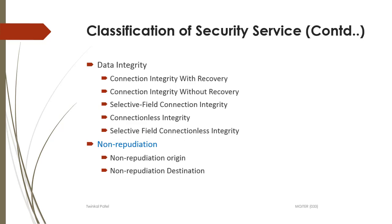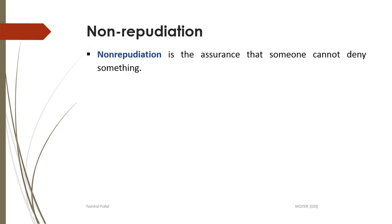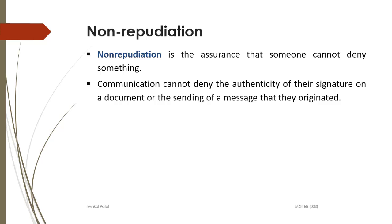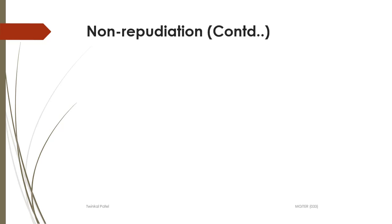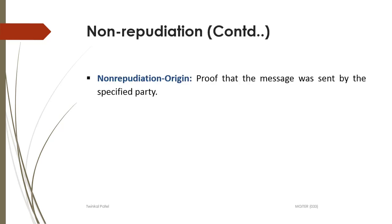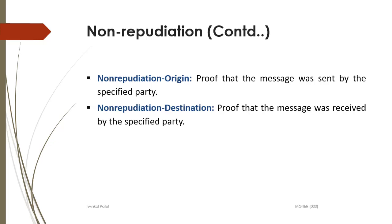The last security service is non-repudiation. Non-repudiation is the assurance that someone cannot deny something. A communicating party cannot deny the authenticity of their signature on a document or the sending of a message they originated. For example, if a bank customer transfers one lakh to a friend, the customer cannot later deny having done that transaction. Non-repudiation has two subtypes: non-repudiation origin, which proves the message was sent by the specified party, and non-repudiation destination, which proves the message was received by the specified party.